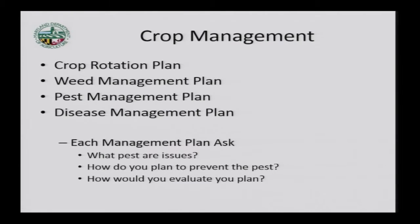Weed management, pest management, and disease management all follow a similar layout in the organic system plan. We ask what problems you're having — for example, Johnson grass, crab grass, or Jimsonweed — and then what you're going to do to control them: cultivate, use plant suppression crops, or a flame weeder when needed. Many of the management practices you can implement are in checkboxes, which also gives you ideas of what management practices you can use.